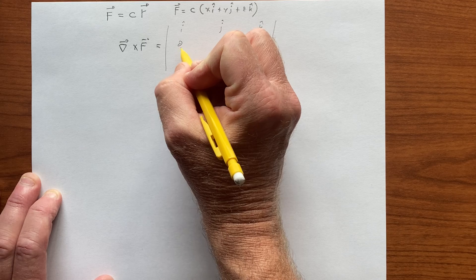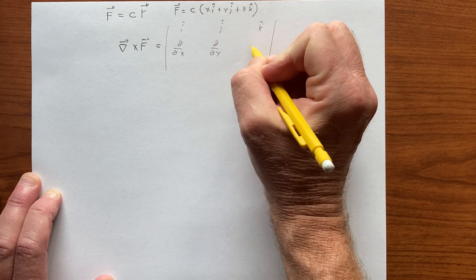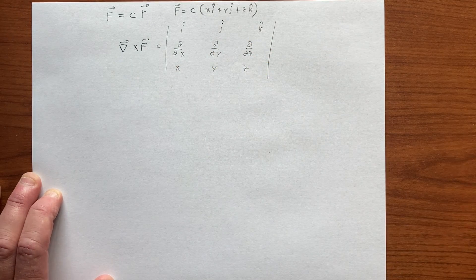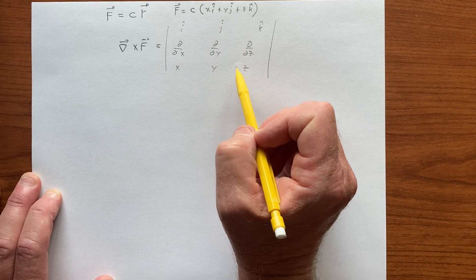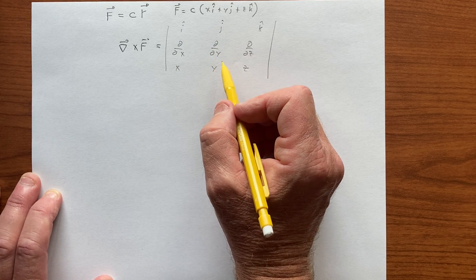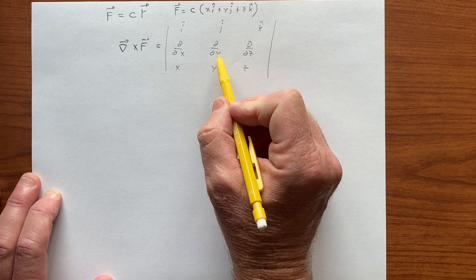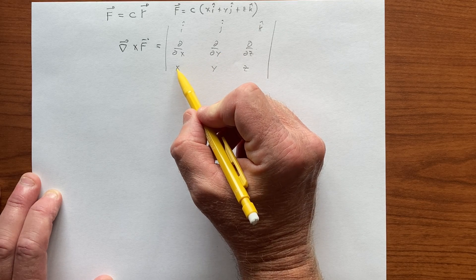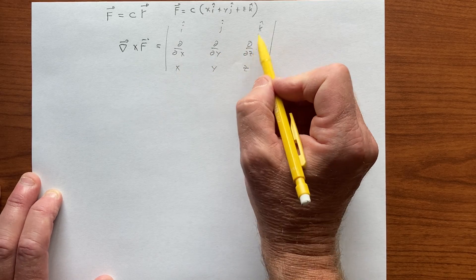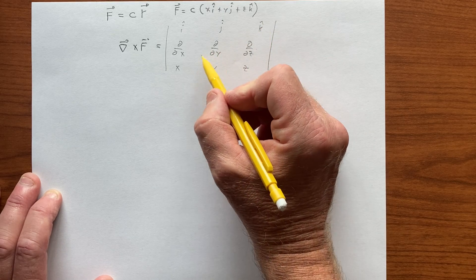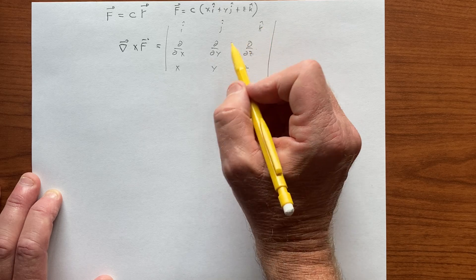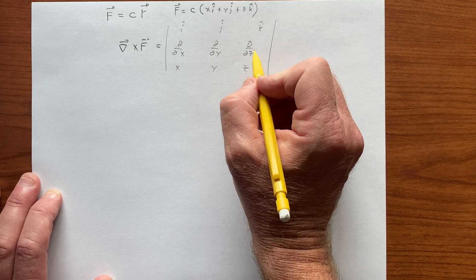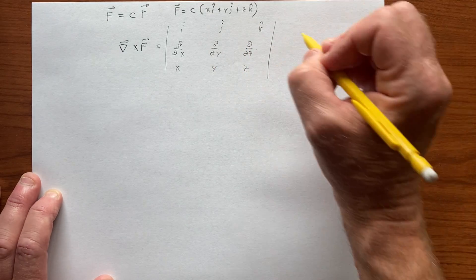So we take X, Y, and Z derivatives of X, Y, and Z components, but they're always derivatives of a different component. So here we take DY of Z, that's zero. Then we'll take DZ of X, that's zero. So here we have derivative of X and Y. Here we have derivative in X of Z, derivative in Z of Y, and so on. So this is going to be zero.